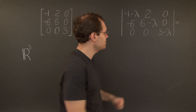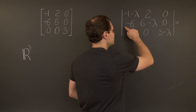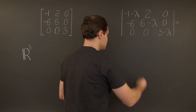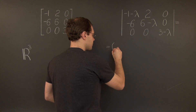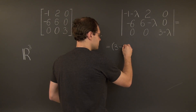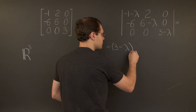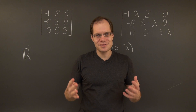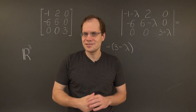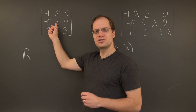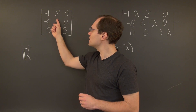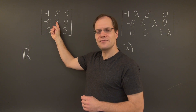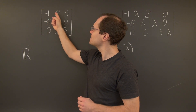This determinant equals 3 minus lambda times the determinant of this 2x2 submatrix. So we have 3 minus lambda times the determinant of this submatrix. We know exactly what happens with these 2x2 matrices — we get lambda squared minus the trace times lambda plus the determinant. So in this case, we'll have lambda squared minus 5 lambda plus 6.